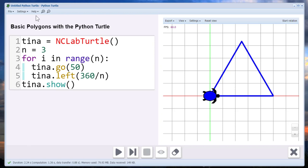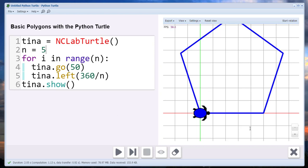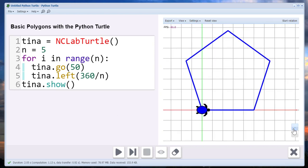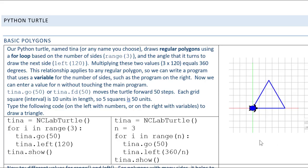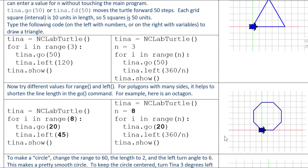But now if we want to try a different regular polygon, all we have to do is change this value here. So if I want to draw a pentagon, I can change that to five, and it automatically adjusts the angle and of course the number of sides.